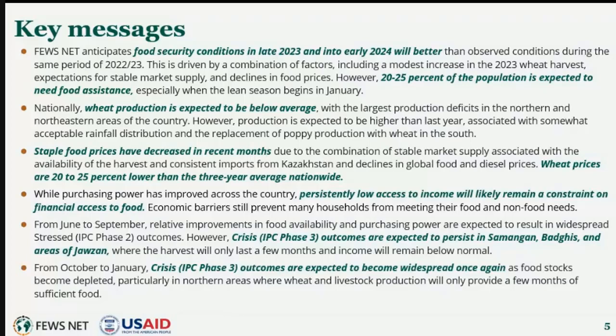During the harvesting and post-harvest periods, stressed IPC phase two outcomes are expected to be widespread across the country. In the areas of highest concern — including Samangan and Baghdis provinces, as well as areas of Jajjan and many urban areas — crisis IPC phase three outcomes are likely. In these rural areas, the harvest is only expected to last through August, with households facing increasing consumption deficits and low income, particularly from livestock. From October onward, as winter sets in, crisis outcomes are expected to become widespread across the northern drought-affected areas, as well as the highlands of the center and northeast, due to minimal food stocks and seasonally low income.